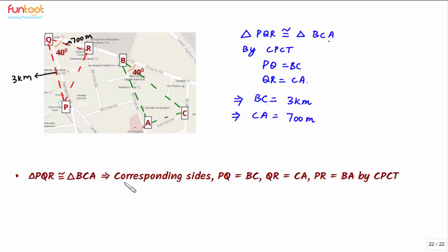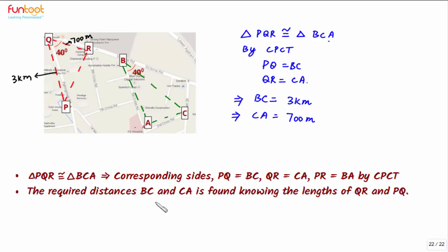Let's summarize how we did this question. It was given that triangle PQR is congruent to triangle BCA. Therefore, by CPCT, PQ equals BC, QR equals CA, and PR equals BA. We then found the required distances BC and CA using the known lengths of PQ and QR.